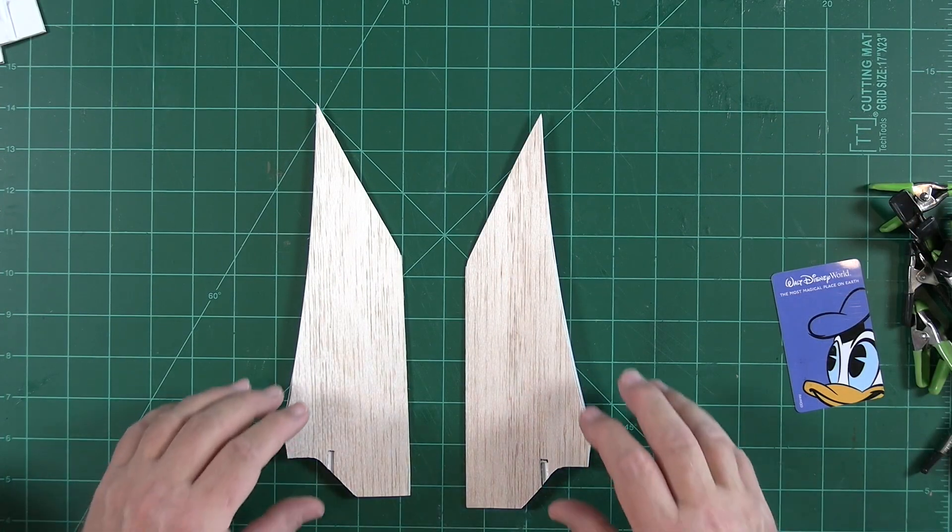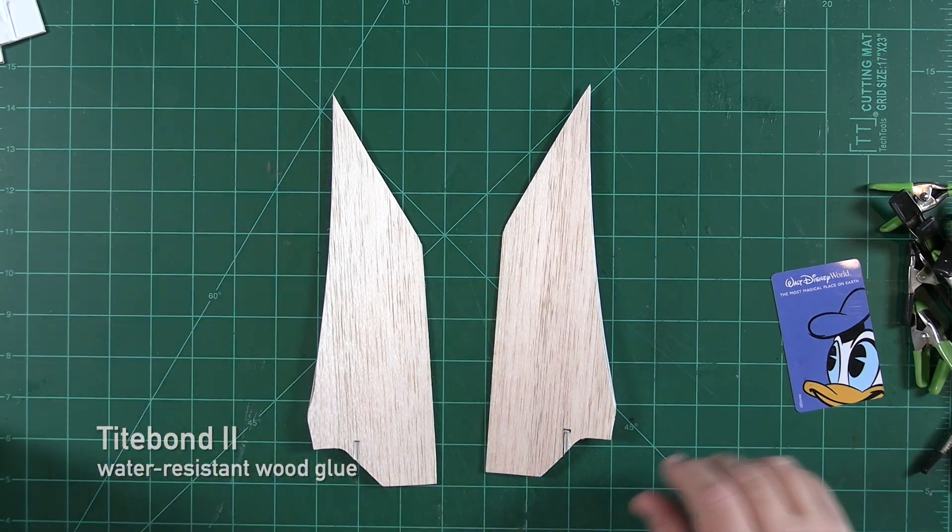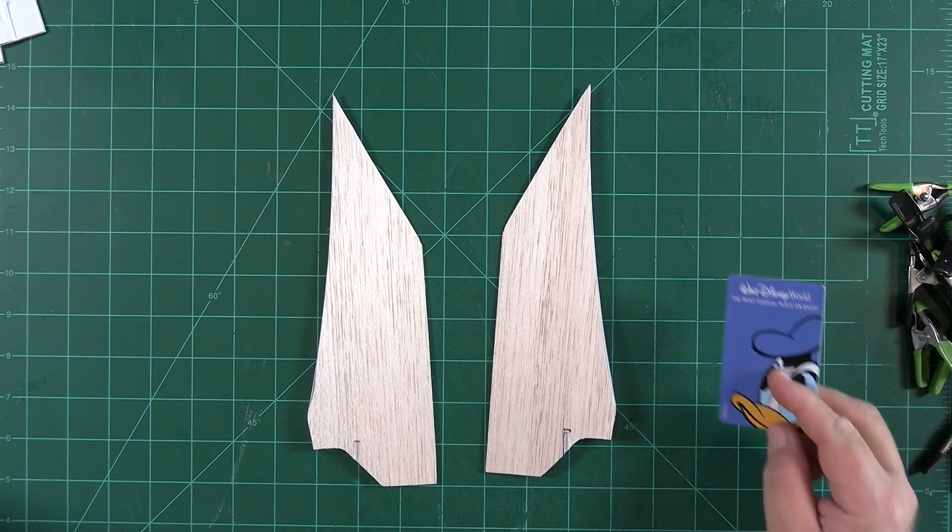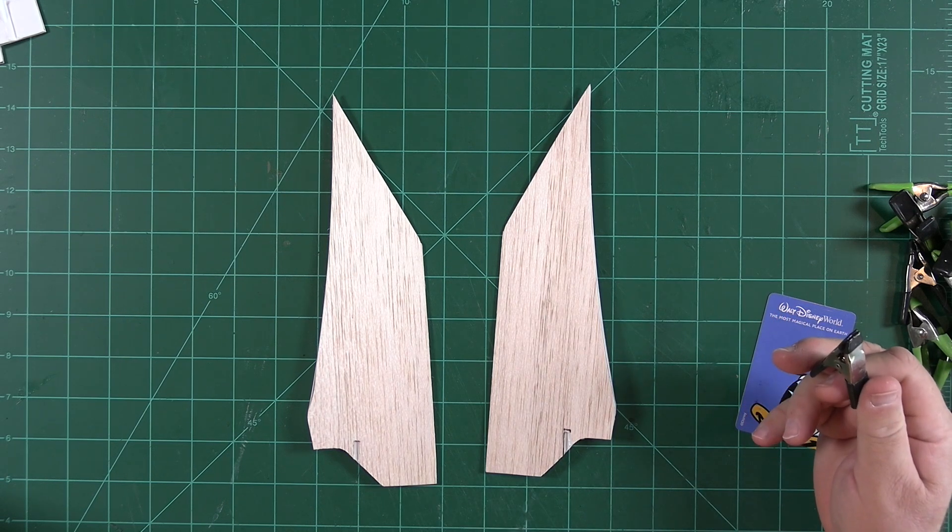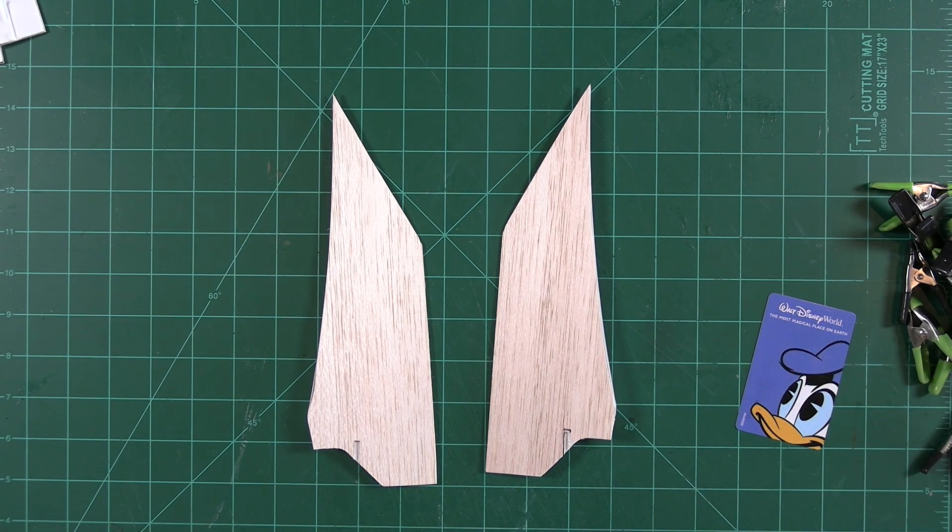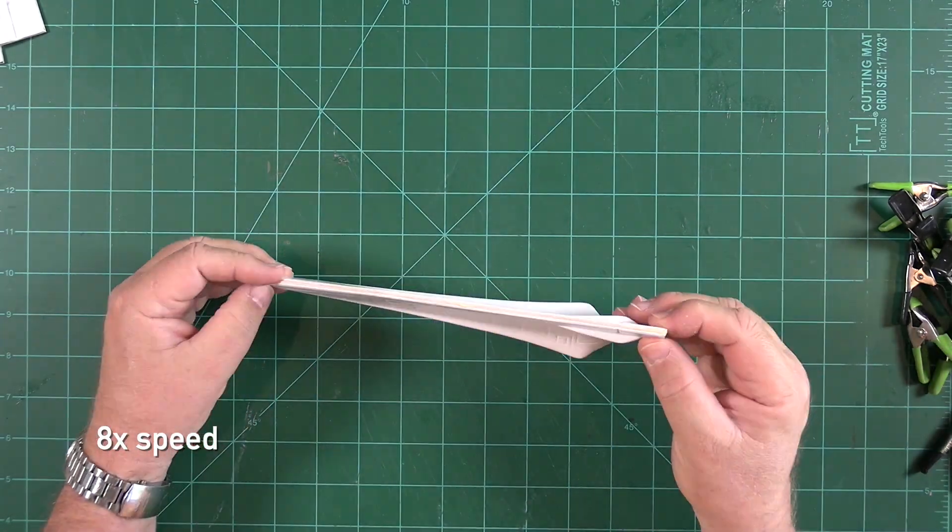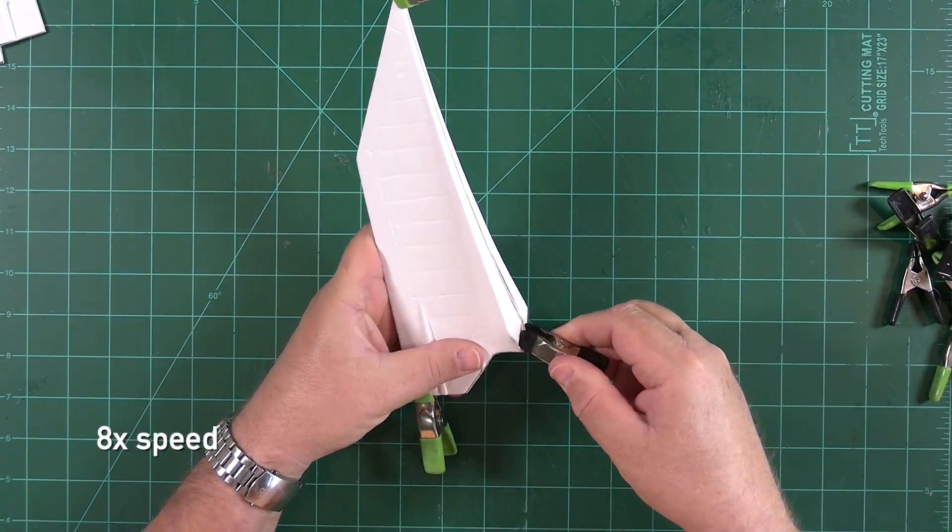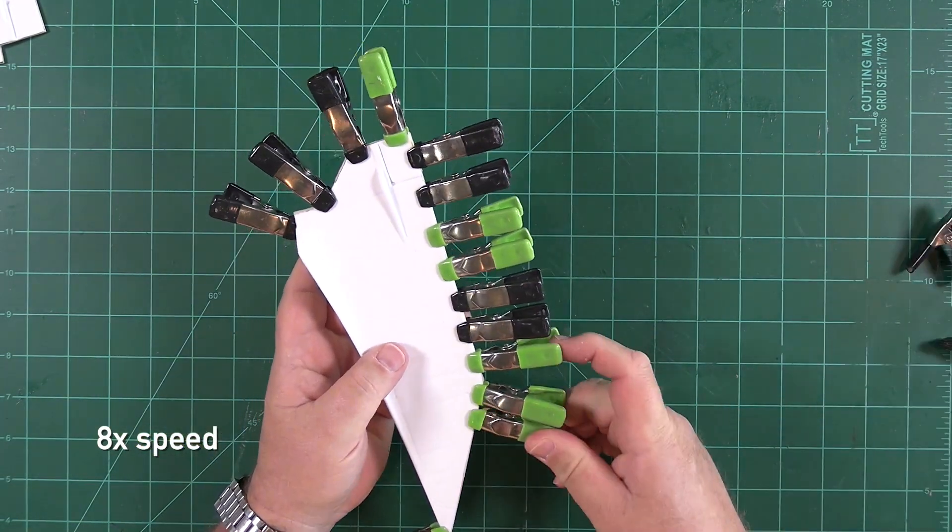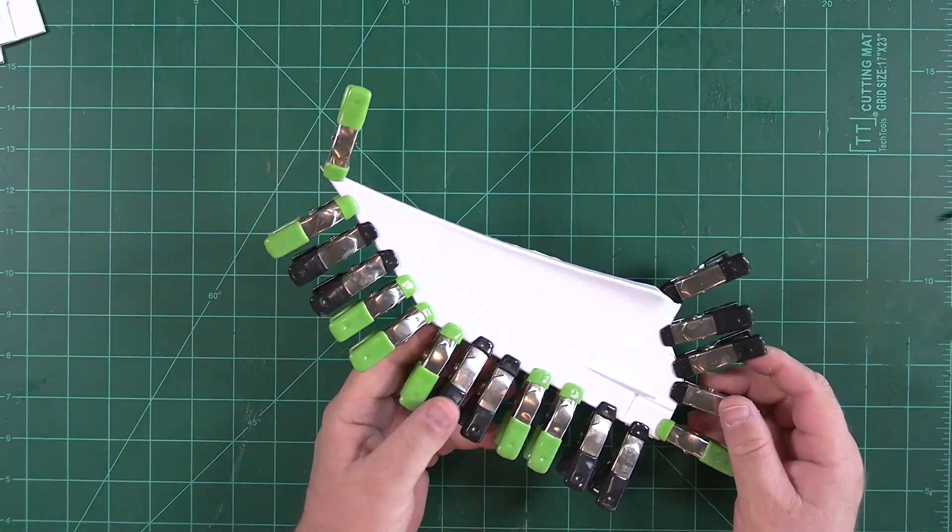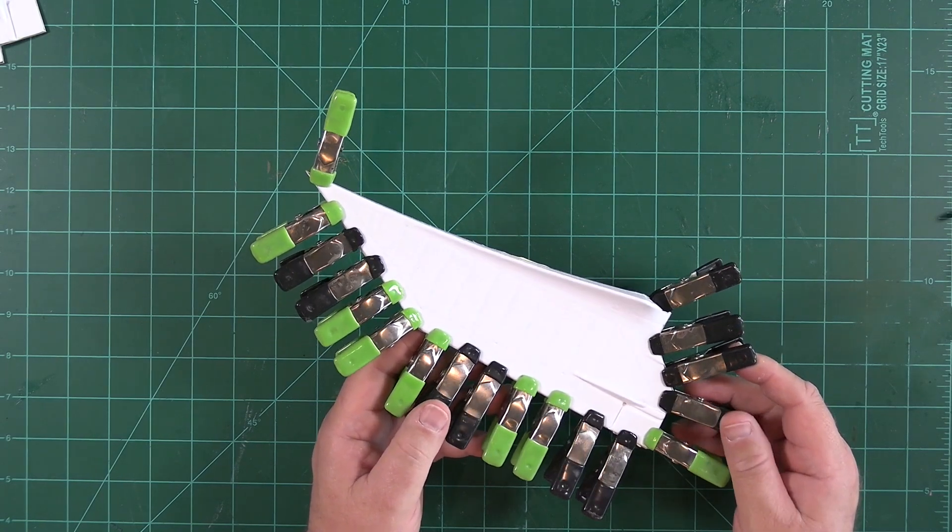Let's go ahead and glue the fin halves together. We're going to use Titebond II, good old carpenter's wood glue. We'll spread that glue out with a plastic room key card, and then we'll use these small clamps around the periphery of the fin to clamp everything together. Let's get started. And there we go. The first fin is all clamped up. We'll let this dry for about two hours and then we can remove the clamps.